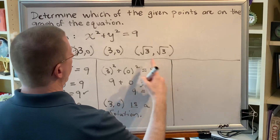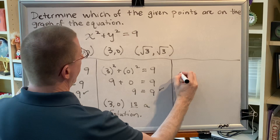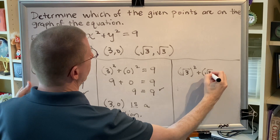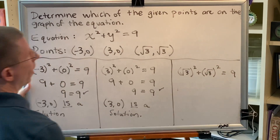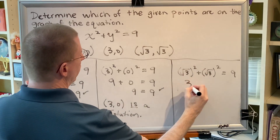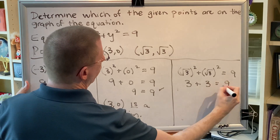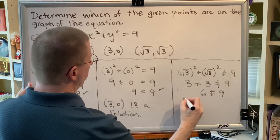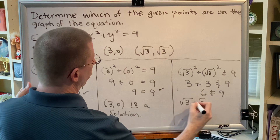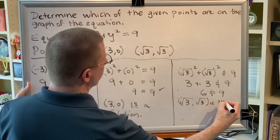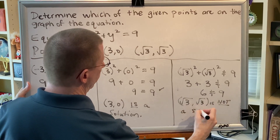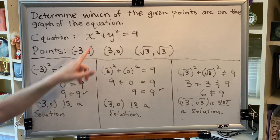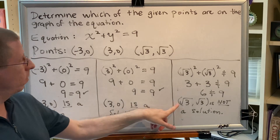Final point: both x and y are replaced with √3. We get (√3) squared plus (√3) squared equals 9. The square and square root cancel, giving just 3. So 3 plus 3 is 6, and 6 does not equal 9. Therefore, (√3, √3) is not a solution. If we were to graph this circle, it would go through (-3, 0) and (3, 0), but not (√3, √3).